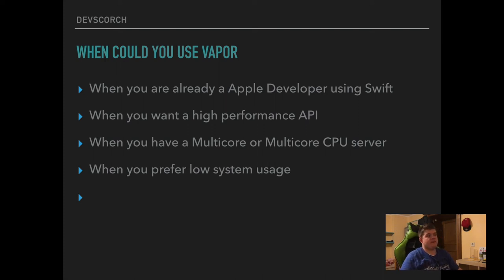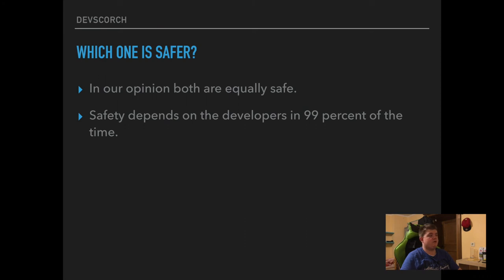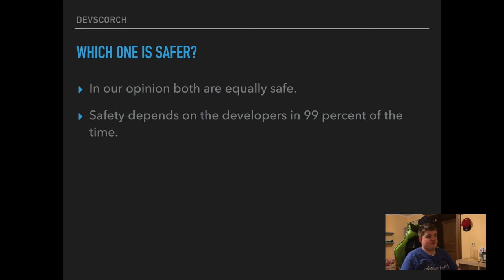Which one is safer? As I stated in my last video about databases, I think safety depends on the developers 99% of the time. If developers build safe applications and have good coding practices, you don't need to worry about which one is safer. Safety is always on the developers — if an API gets hacked, it's the developers who made the mistake.